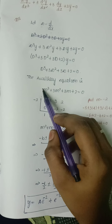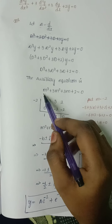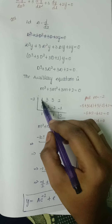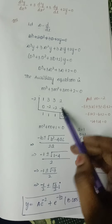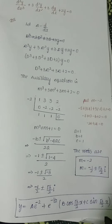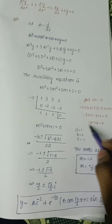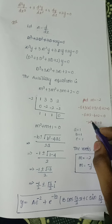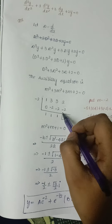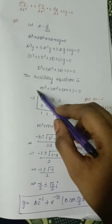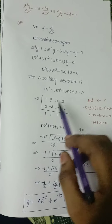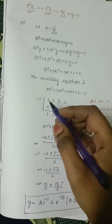We solve this using synthetic division (L-division). We write the coefficients 1, 3, 3, 2 in the top row. We try substituting values like 1, -1, 2, -2 to find a root. Substituting m = -2 gives zero, so -2 is a root. We place -2 outside for the synthetic division.